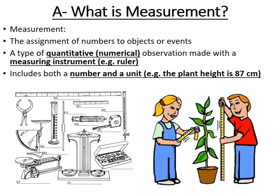We're going to start off with what measurement is. In science we take many measurements — it's really just assigning numbers to objects or events. A measurement is typically going to be a type of observation, specifically a quantitative observation. Quantity means a numerical observation as opposed to a descriptive one with words.